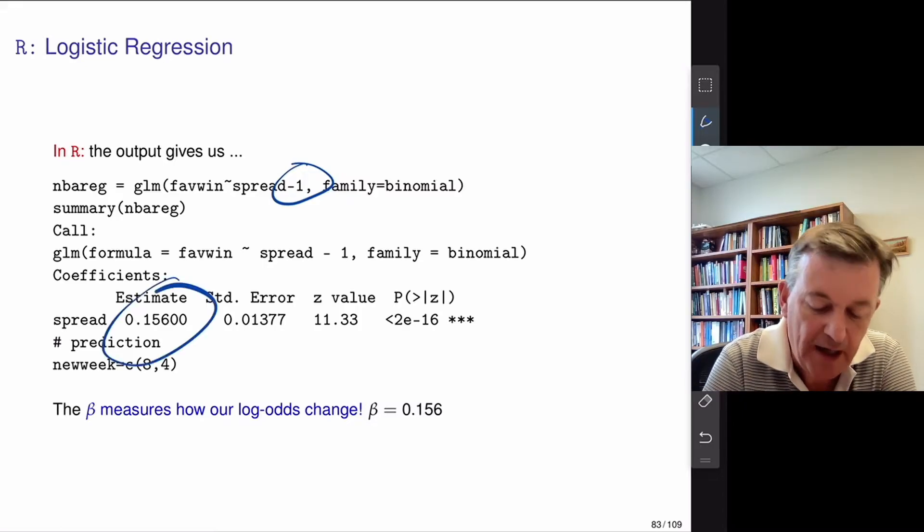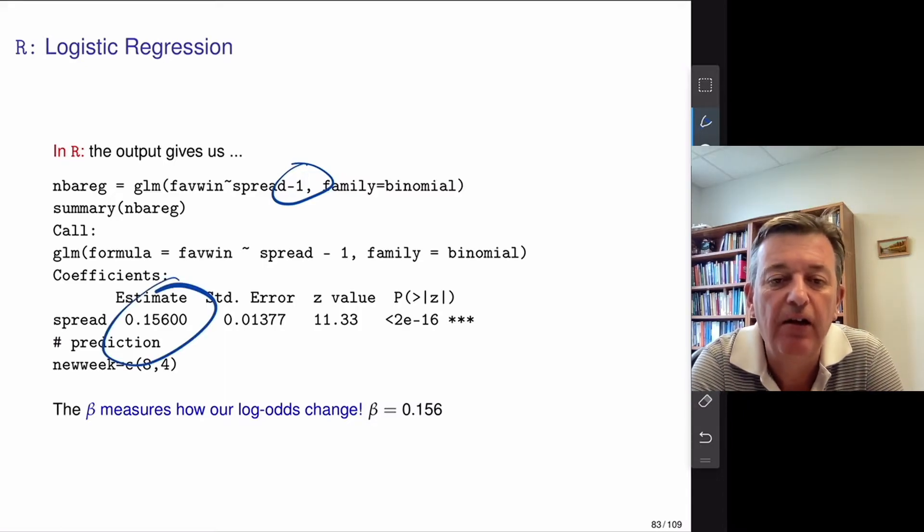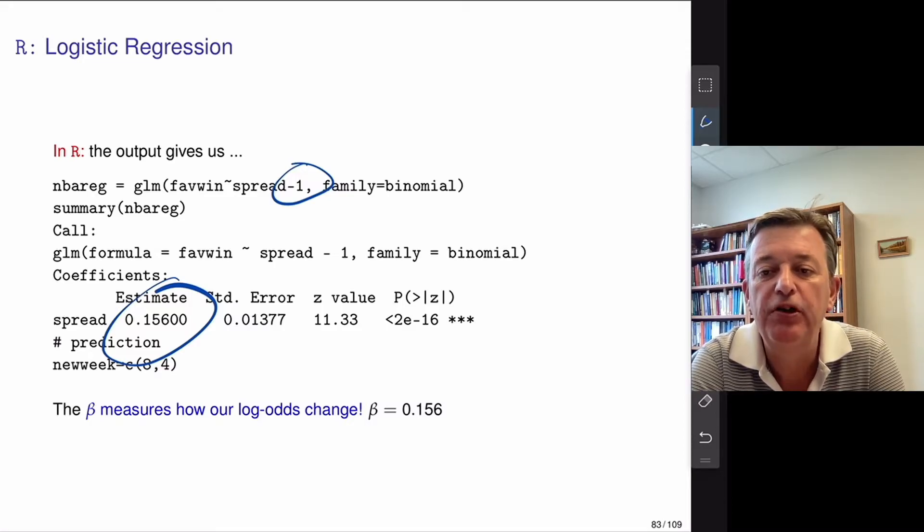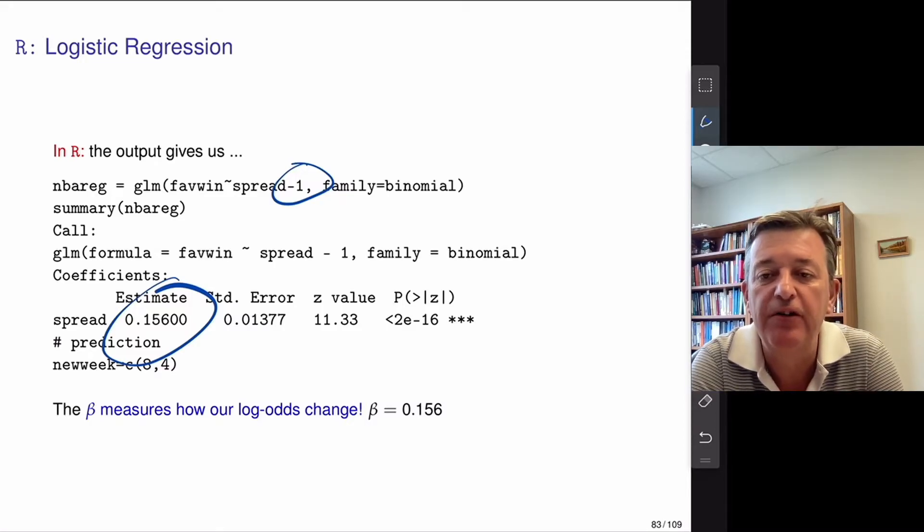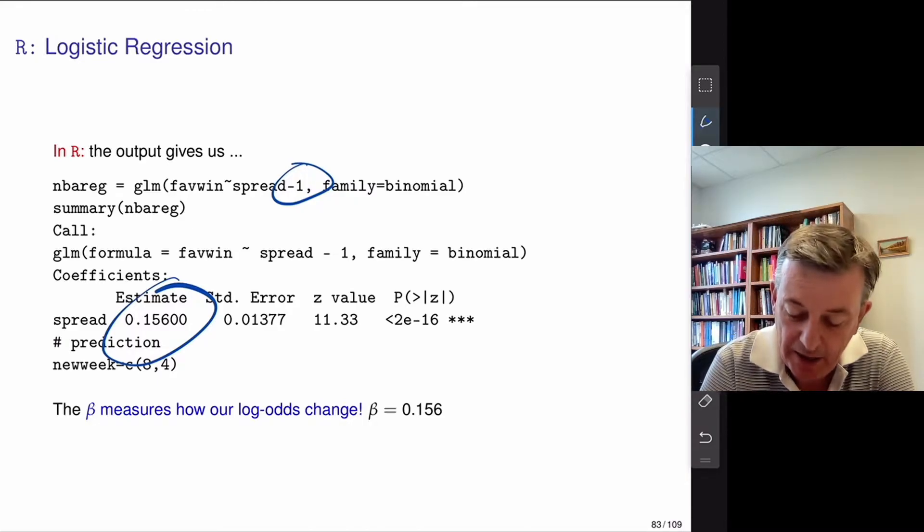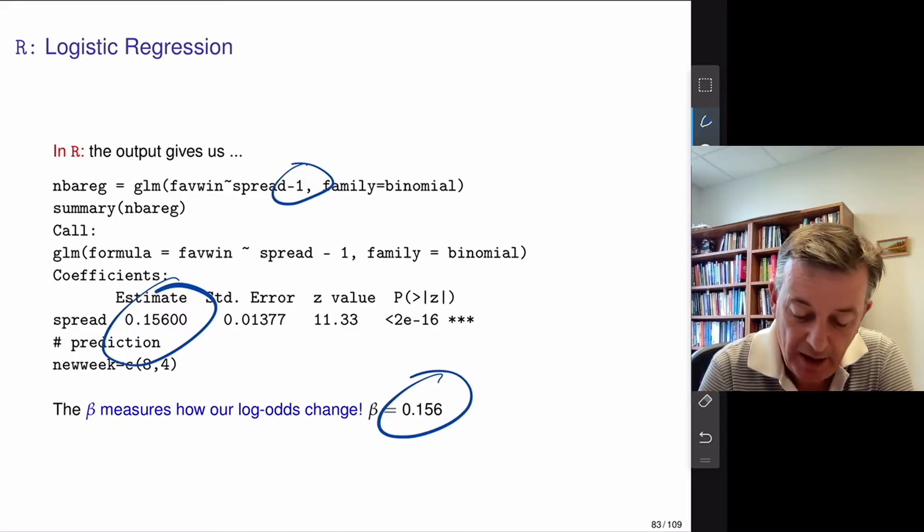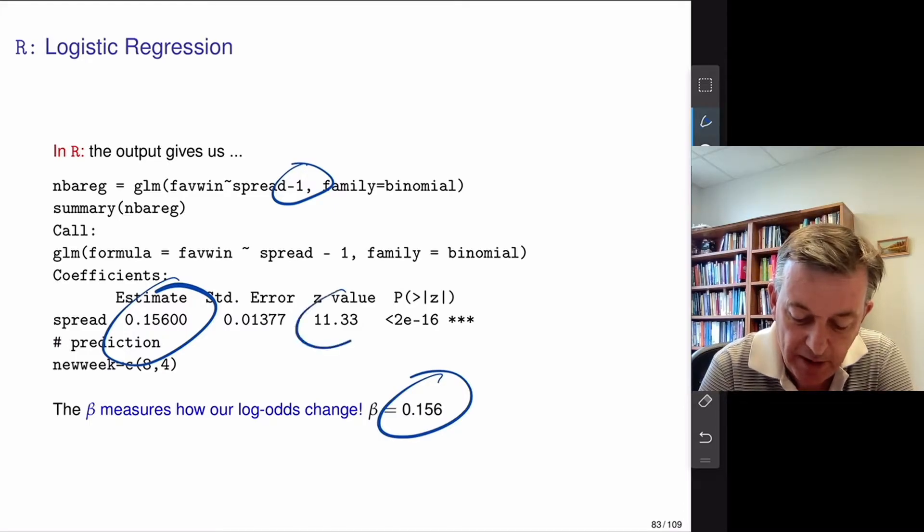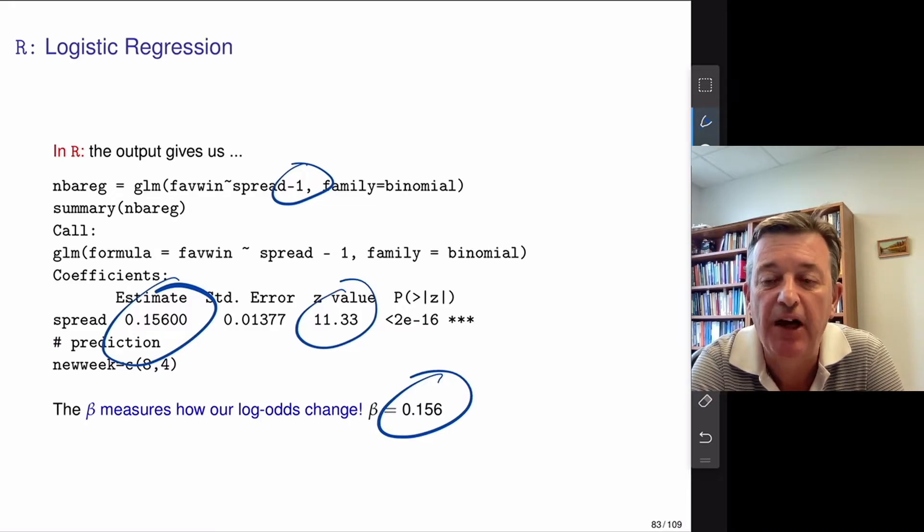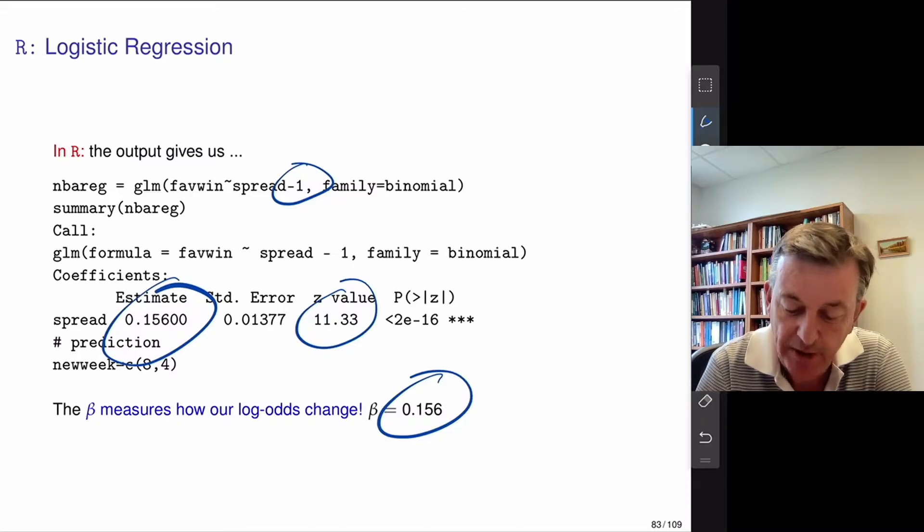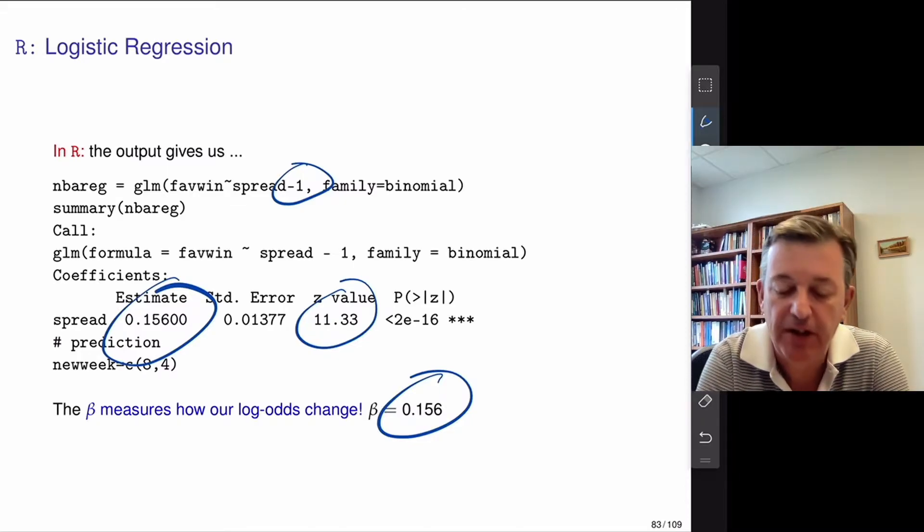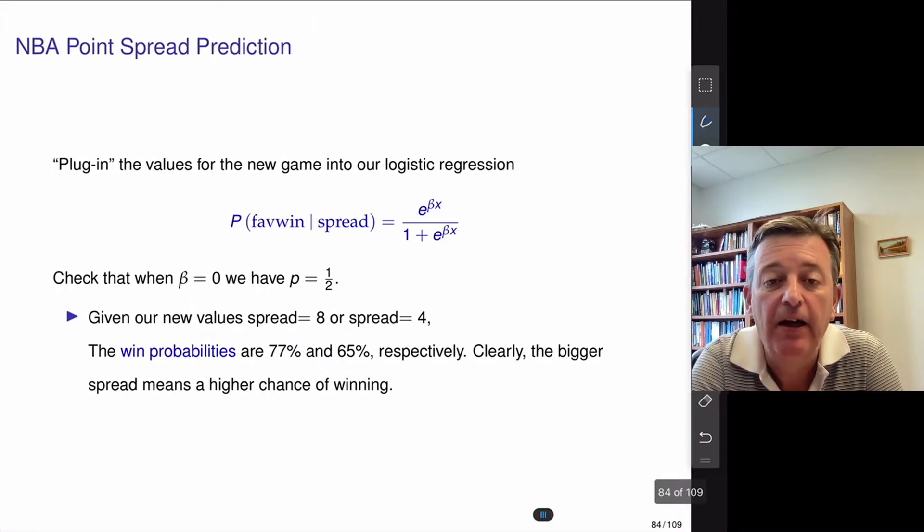And again, we can see an estimate on the log odds scale of how much does a one point change in the point spread affect your estimate of the probability of the favorite winning. And again, on the log odds scale, it's about 0.156. If I take the ratio of these two, I get a z score or a t score of 11. So it's highly statistically significant. The Vegas point spread is good at predicting the probability of winning. And again, if it goes up by 1, there's about an 18% chance change in the odds.